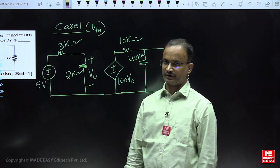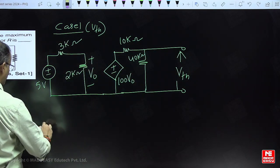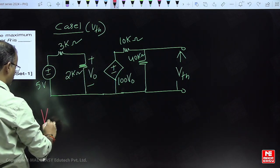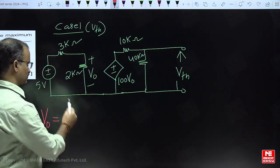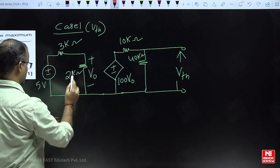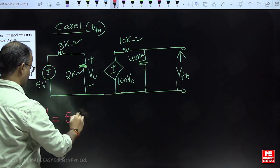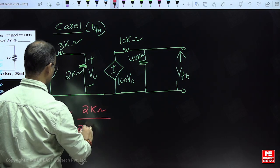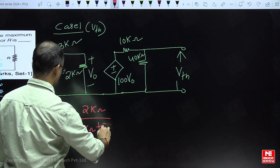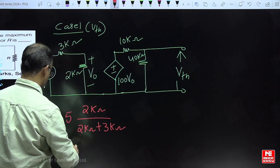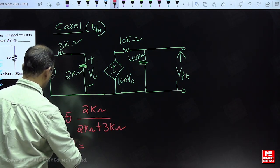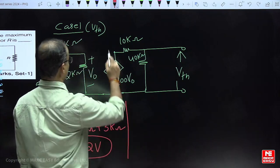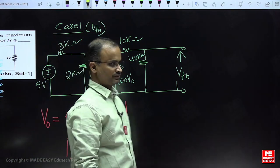First, let us find out the V_naught value. To find V_naught, let us apply the voltage division technique. Five volts are distributed between the first element and the second element. Using 2 kΩ divided by the total resistance, if you simplify this, V_naught is equal to 2 volts.